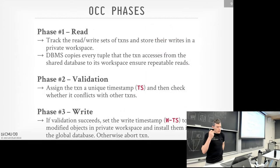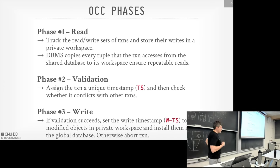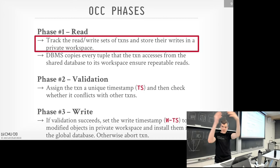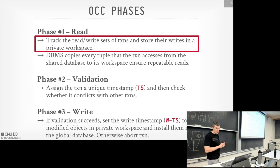OCC is broken up into three phases. The first phase is called the read phase, where transactions can actually read and write to the database. Any time you read and write something, you're copying it from the global state into your private workspace. Any subsequent reads on objects you've already copied go to the private workspace copy — this guarantees repeatable reads, which is one of the anomalies we want to avoid.